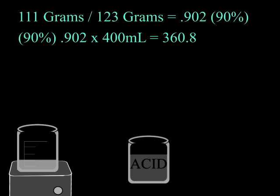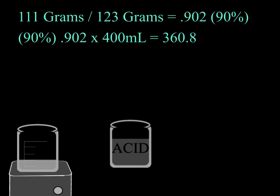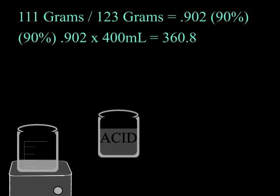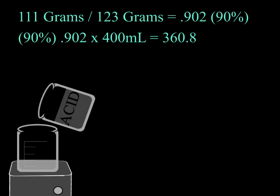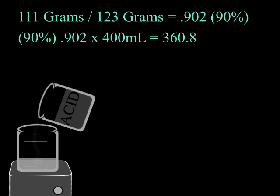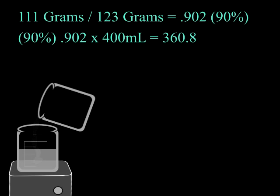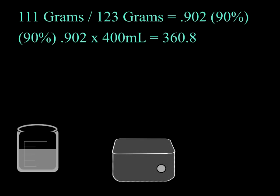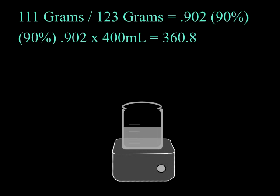Now that we have our acid amount figured out, we can add it slowly to the copper carbonate. If you have your sep funnel, now would be a good time to use it. Set it up and begin stirring and adding your acid slowly, as it will give off gas and may bubble over if you do it too quickly. After all of your acid is used up, continue stirring until it no longer bubbles.